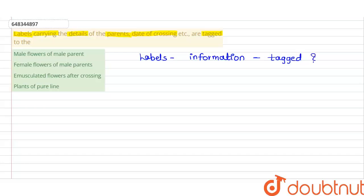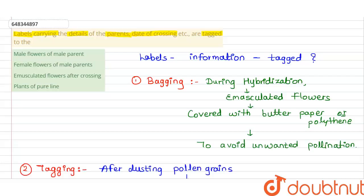To solve this, we need to understand two main methods used in hybridization: one is called bagging and the other is called tagging. Once we understand these two methods, it becomes easy to identify where tagging is done.